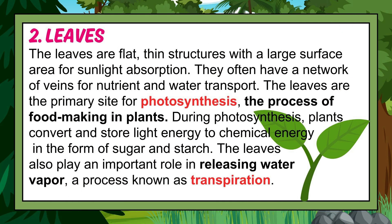The leaves are flat, thin structures with a large surface area for sunlight absorption. They often have a network of veins for nutrient and water transport. The leaves are the primary site for photosynthesis, the process of food-making in plants. During photosynthesis, plants convert and store light energy to chemical energy in the form of sugar and starch. The leaves also play an important role in releasing water vapor, a process known as transpiration.